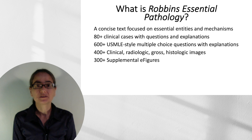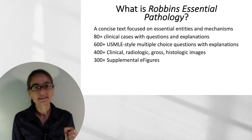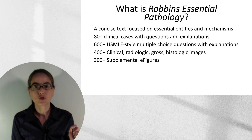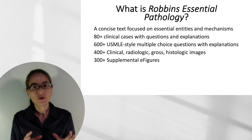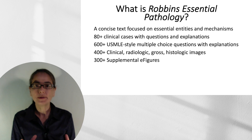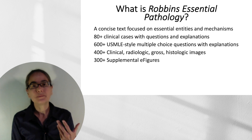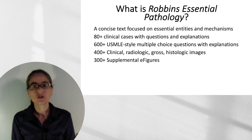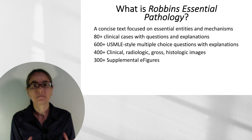Robbins Essential Pathology is a concise text focused on the essential entities and mechanisms. We're focusing on the common entities and the mechanisms that will help you to understand broad principles of health and disease.